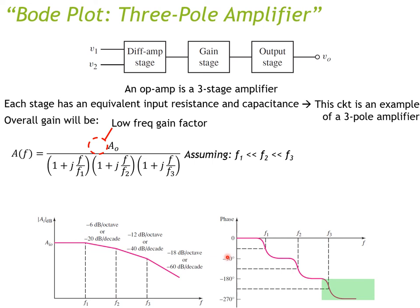Assuming f₁ < f₂ < f₃, we draw the Bode plot. The magnitude stays flat until f₁, then decreases at −20 dB/decade until f₂, then −40 dB/decade until f₃, and finally −60 dB/decade beyond f₃.